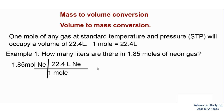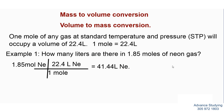So the math: 1.85 times 22.4 divided by one. The answer is 41.44 liters of neon. To recap: one mole of any gas at standard temperature and pressure occupies 22.4 liters, so I began with 1.85 moles, divided by one mole, times 22.4, and got 41.44 liters.